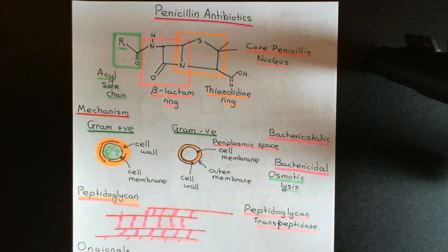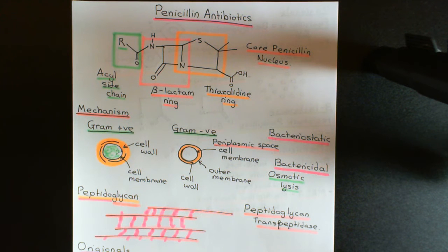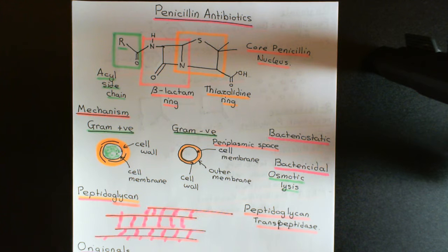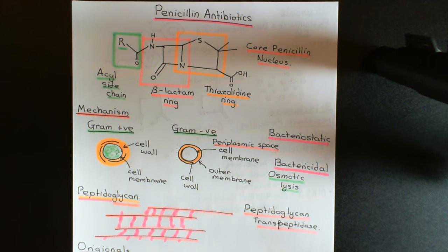Penicillin is not just one antibiotic — it's an entire class of antibiotics with many different examples. The penicillin antibiotics are usually classified into four separate categories: the original penicillins, the beta-lactamase resistant penicillins, the broad-spectrum penicillins, and the extended-spectrum penicillins. I want to go through each of these categories, give you examples of drugs in each class, and then talk about the properties of these different drugs.